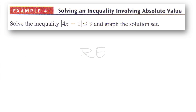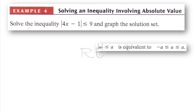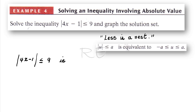We are going to solve the inequality: the absolute value of 4x minus 1, less than or equal to 9. If the absolute value of u is less than or equal to a, then u is between negative a and a. Less is a nest. Therefore, 4x minus 1 is between negative 9 and 9.